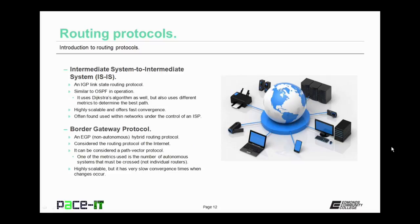Next up, Intermediate System to Intermediate System, or IS-IS. IS-IS is a link state routing protocol like OSPF, and similar to OSPF it too uses the Dijkstra algorithm, but it uses different metrics to determine the best path. IS-IS is highly scalable and offers fast convergence. IS-IS is often found within networks under the control of an internet service provider.